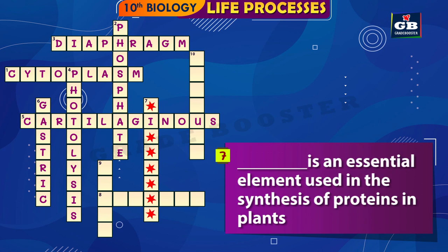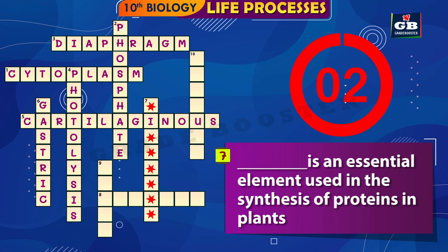7 Down: Dash is an essential element used in the synthesis of proteins in plants. The answer is nitrogen. Nitrogen is an essential element used in the synthesis of proteins in plants.